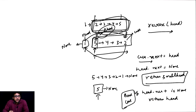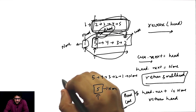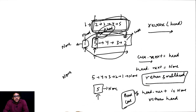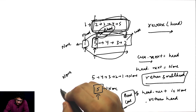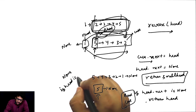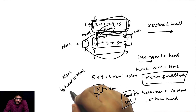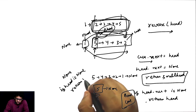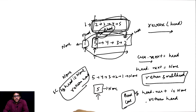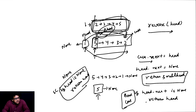One more thing: we need to handle a special case. If given a None linked list with no elements, the reversal is also None. That will be the special case: if head is None, just return None or return head — both are the same. Now I think all cases have been handled. Let's try to code this and understand it programmatically, which will give you more clarity.